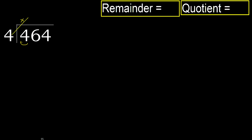4 multiplied by which number is nearest to 4, but not greater? 4 multiplied by 2 is 8 — 8 is greater. Multiply by 1 is 4, it is not greater. Subtract. 4 minus 4 is 0. Next,